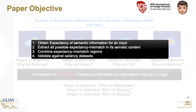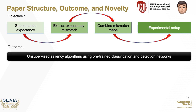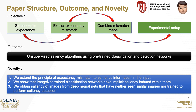The objective of this paper is to tackle this challenge formally. We first set the expectancy of semantic content of an image, then provide a computationally feasible methodology to extract all possible expectancy mismatch content before combining them. We finally validate our saliency model against model expectancy features, model saliency, and other state-of-the-art saliency models. The outcome is an unsupervised saliency algorithm extracted from classification networks like ResNet, VGG, and Faster R-CNN, trained on ImageNet and Pascal VOC and never exposed to eye-tracking data.